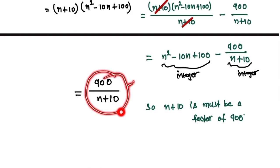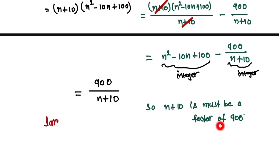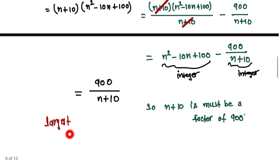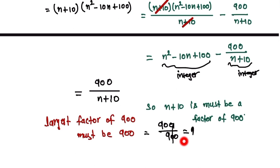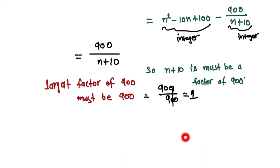Here we see that n + 10 must be a factor of 900. For this expression to be an integer, 900 must be divisible by n + 10. The largest factor of 900 is 900 itself, so 900 divided by 900 equals 1.